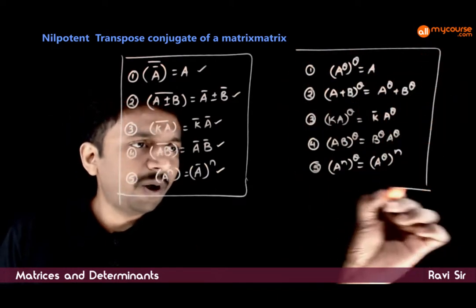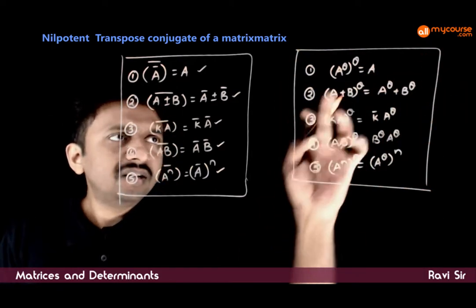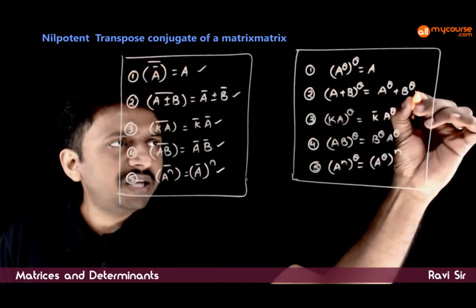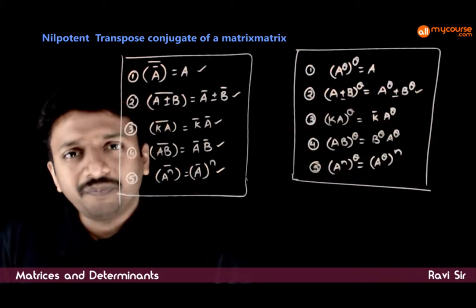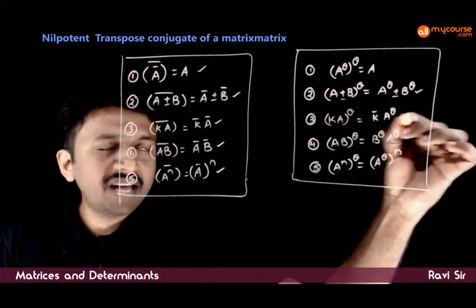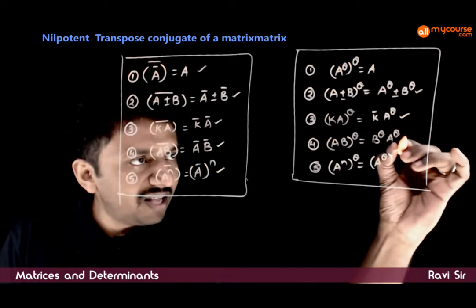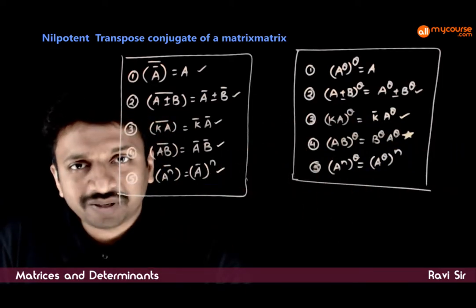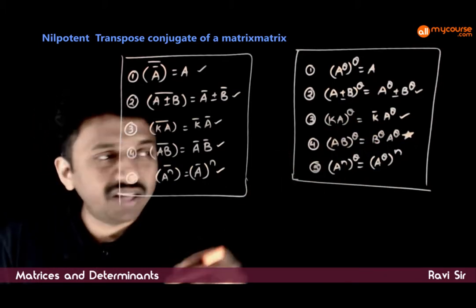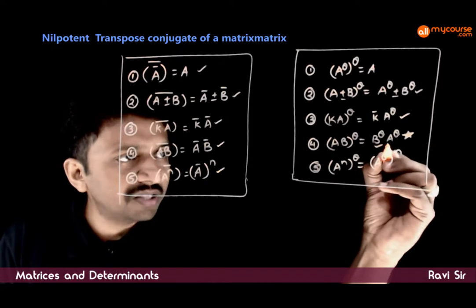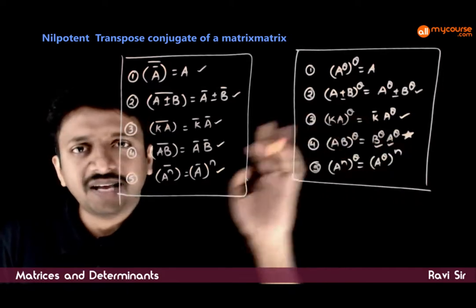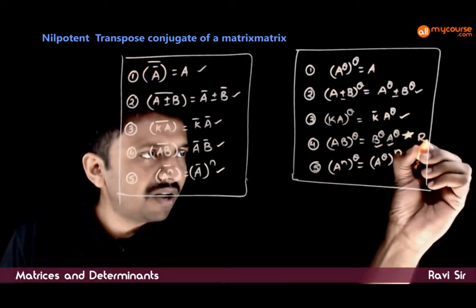The properties of transpose conjugates are: (A theta) whole theta gives you A back; (A ± B) theta is A theta ± B theta; (kA) theta is k conjugate times A theta — this is the most important property to specially remember. And (AB) theta, that is the transpose conjugate of AB, is B theta times A theta — that is, the reversal law works.